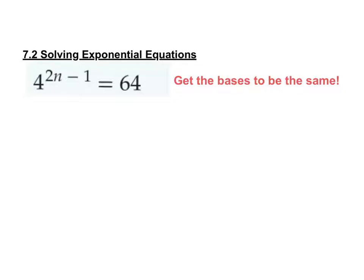Typically what you want to do is rewrite the bigger number using the smaller number. So what you need to be thinking here is: 4 to what power equals 64? Write it down if you think you know what that power should be. Because then you could rewrite 64 as 4 to some power. Think about that for a minute and see if you can figure out what power 4 needs to be raised to to equal 64.